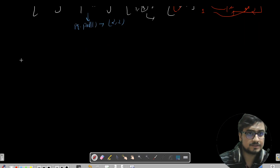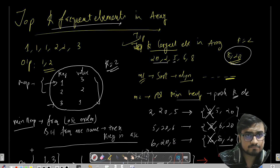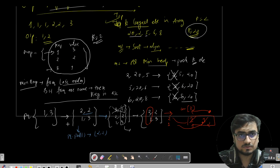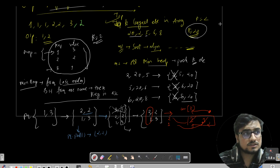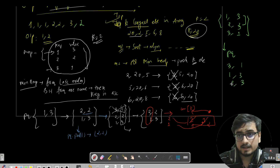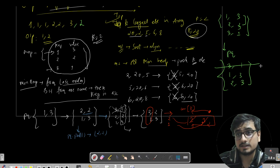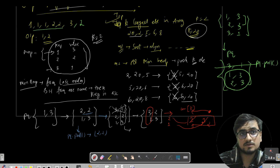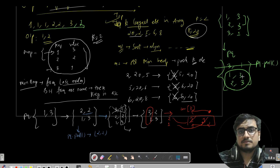Let us see one more case where we have duplicate frequencies. If we add one more 2 to the array, the map shows key 1 has frequency 3, key 2 has frequency 3, and key 3 has frequency 1. In the PQ, (3, 1) is on top, then (1, 3) and (2, 3) sorted by key in ascending order. Since K is 2 and there are 3 elements, we poll to remove (3, 1), leaving (1, 3) and (2, 3) — so the answer is 1 and 2, both with highest frequency 3.